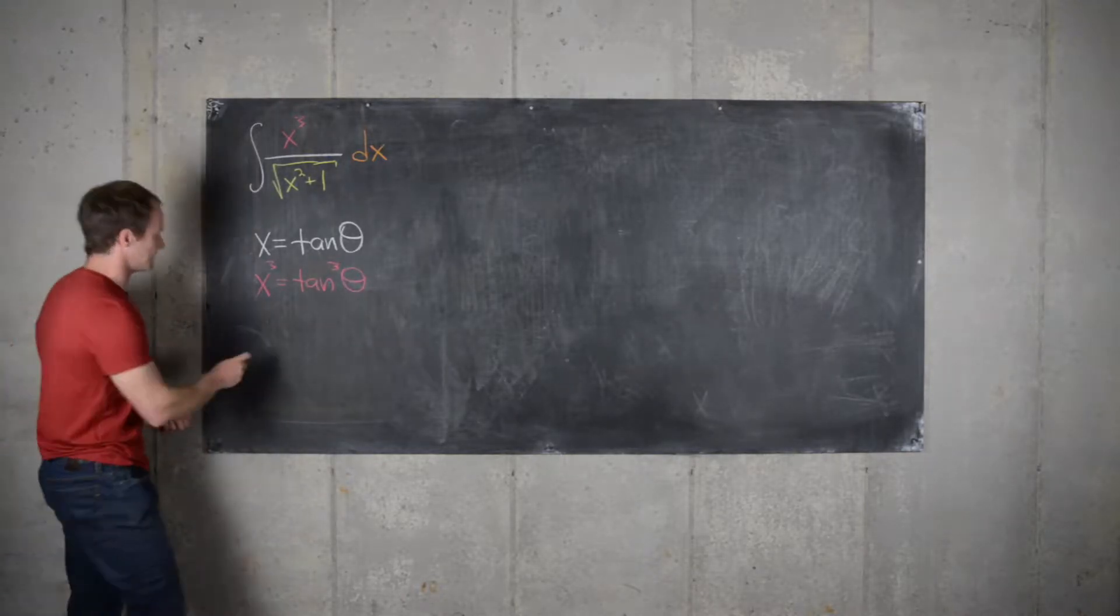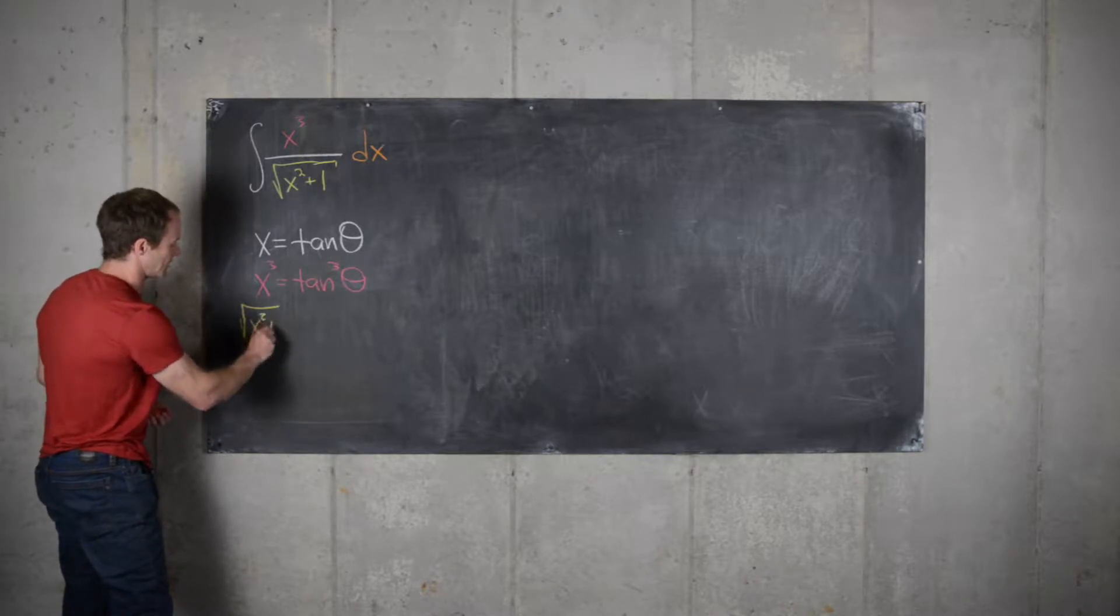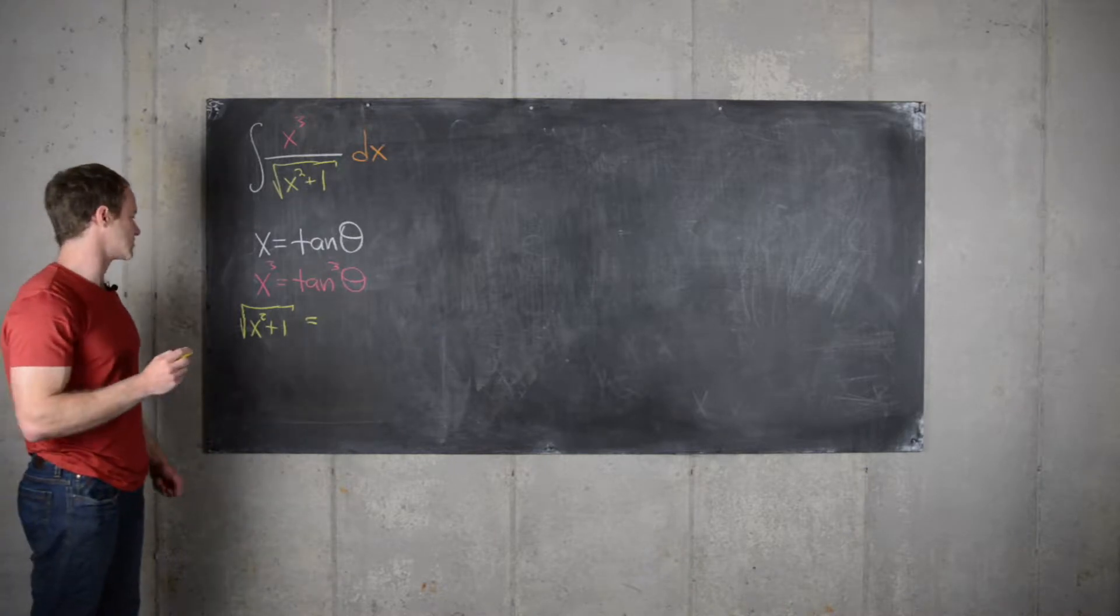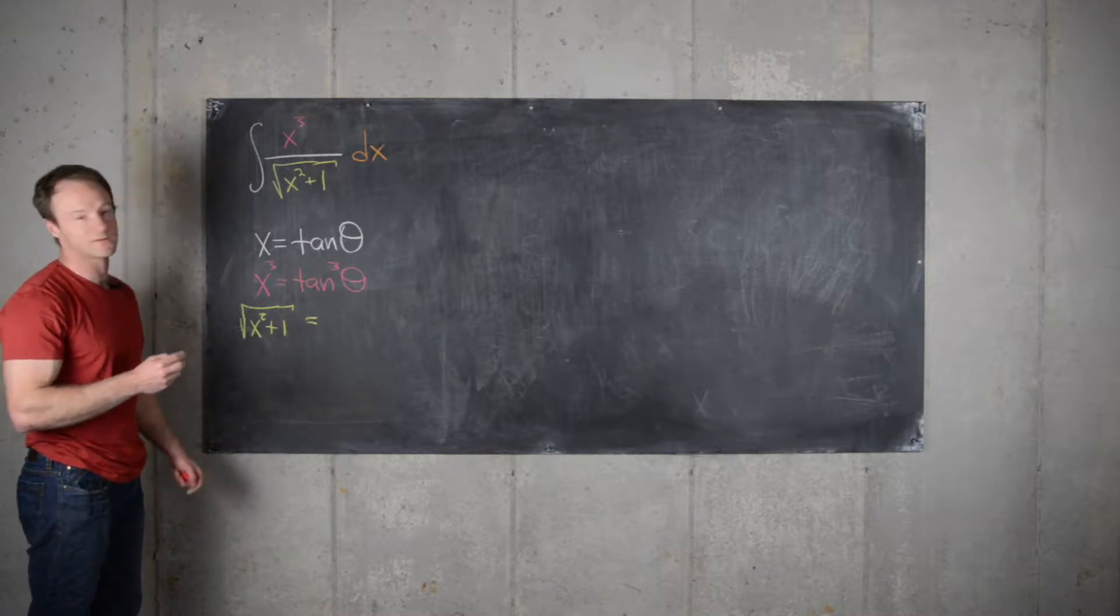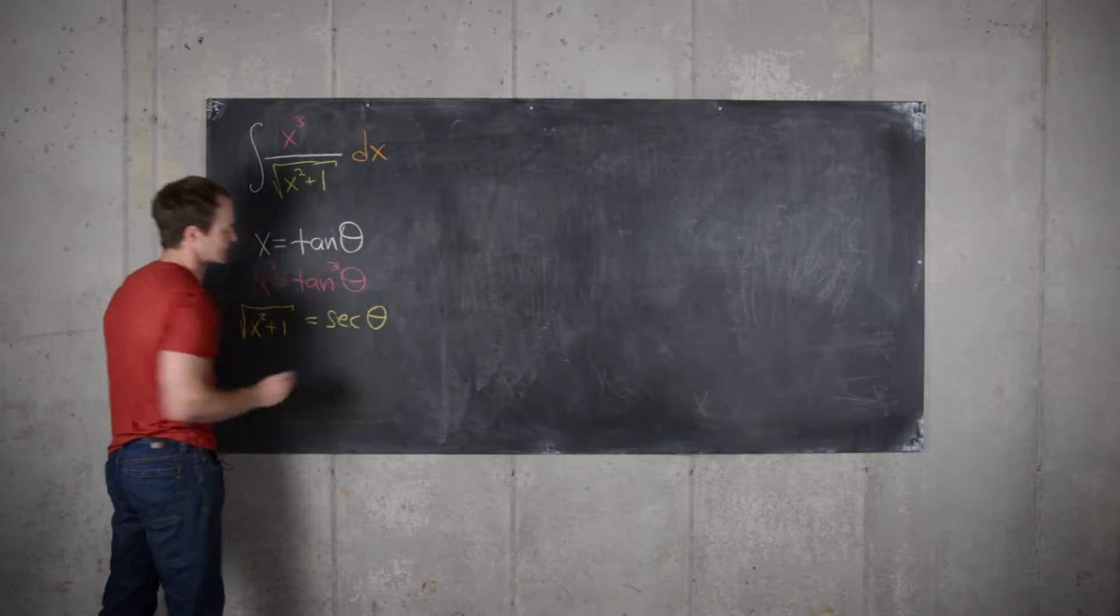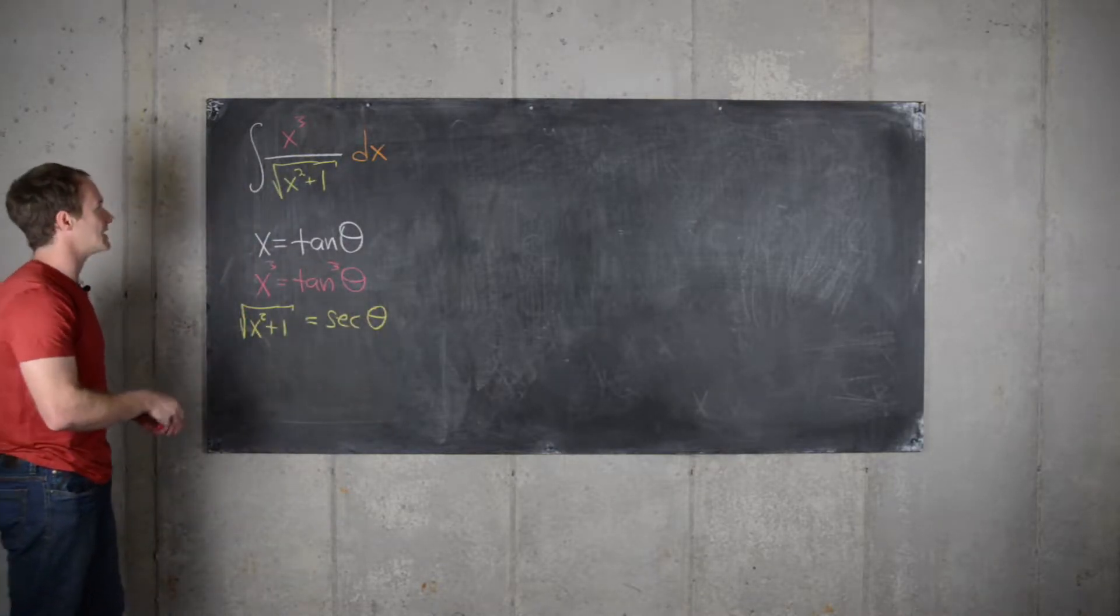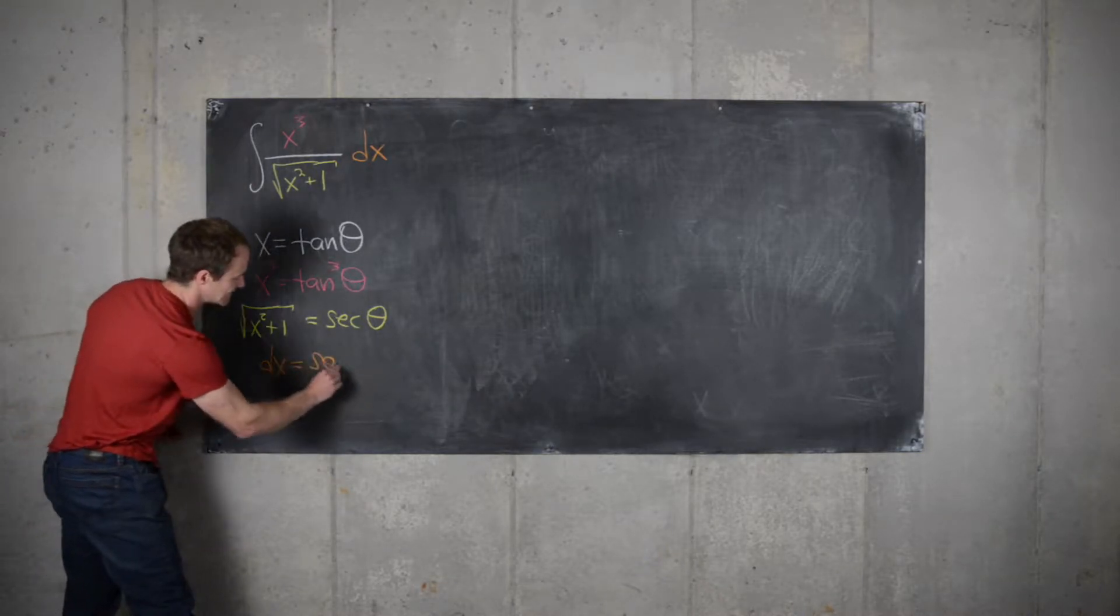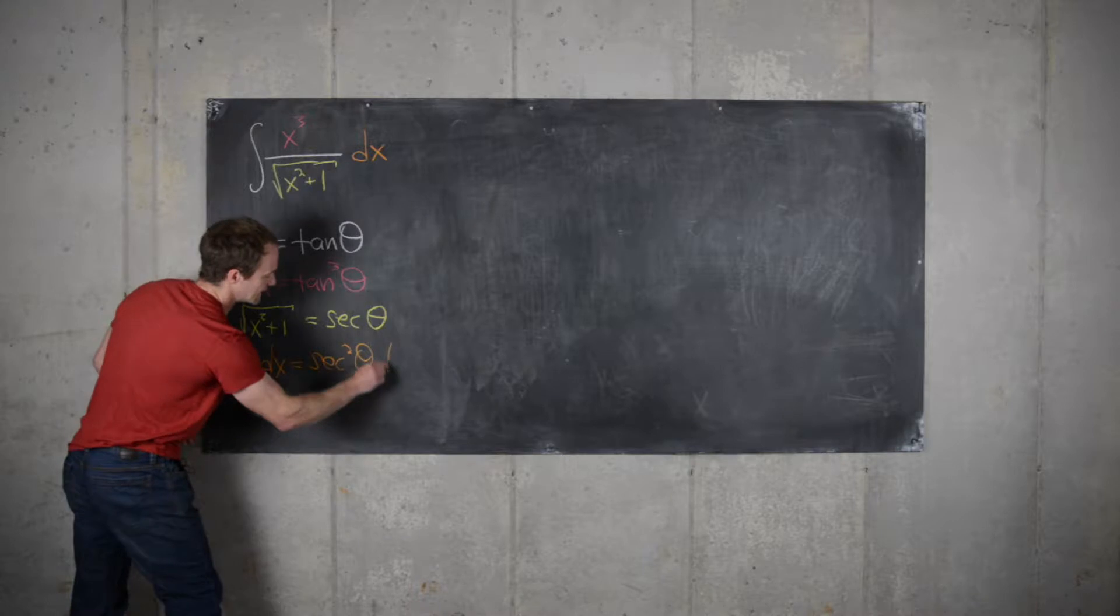And then we have the square root of x squared plus 1 looking at a trig identity, so that'll be the square root of tangent squared plus 1, which is the square root of secant squared, which will be secant. And then finally, the dx component will be given by secant squared theta d theta.